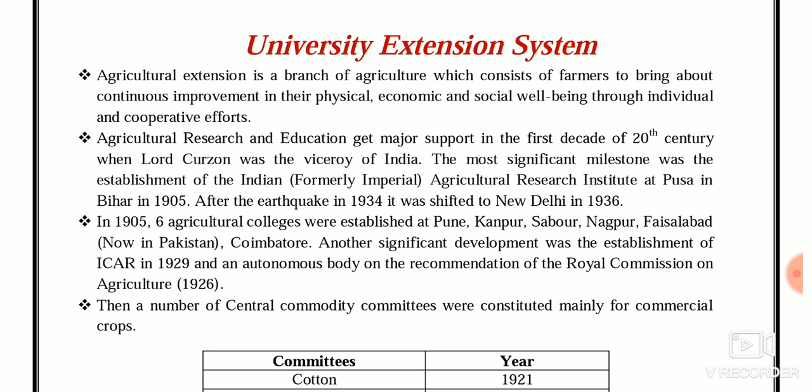Agricultural research and education got major support in the 20th century when Larkzon was the viceroy of India, and an important milestone was established — IARI, the Indian Agricultural Research Institute. Formerly it was called as Imperial; after independence, Imperial was changed to Indian. It was situated at Pusa, Bihar in 1905 when it was established, but after the earthquake in 1934, it was shifted to New Delhi in 1936.